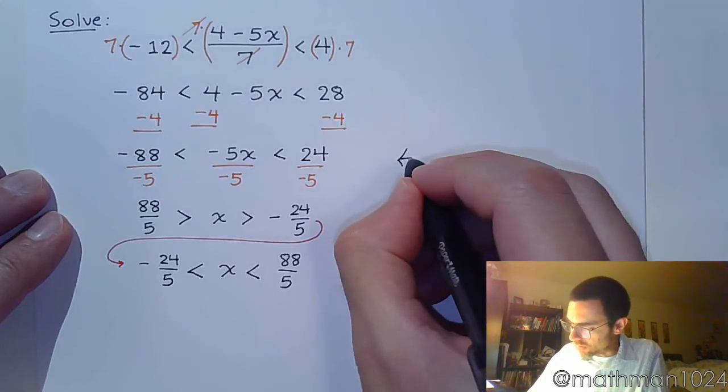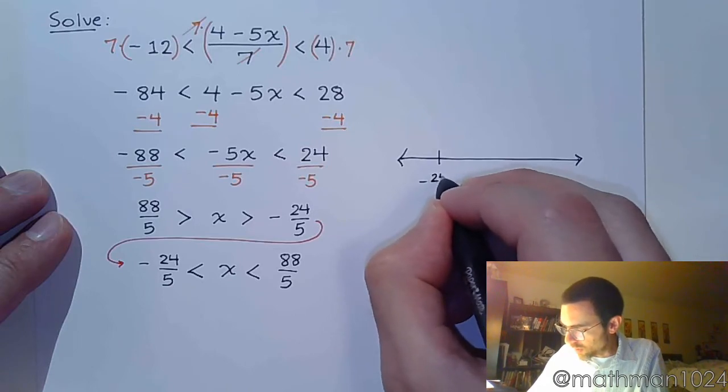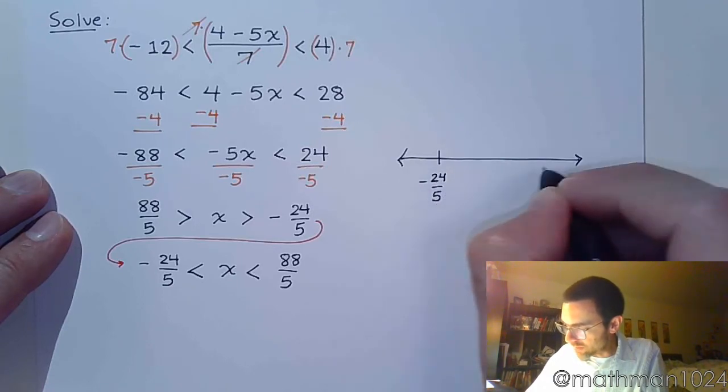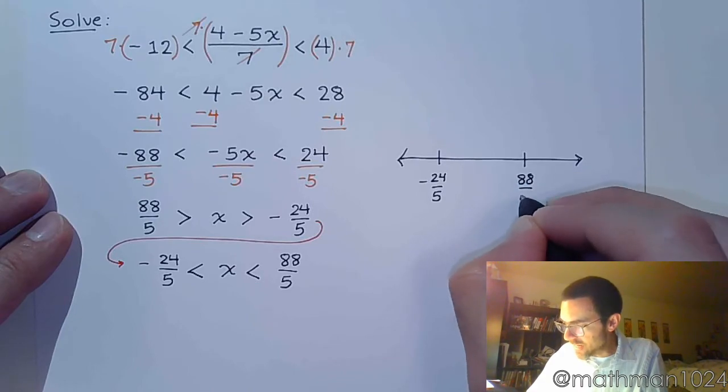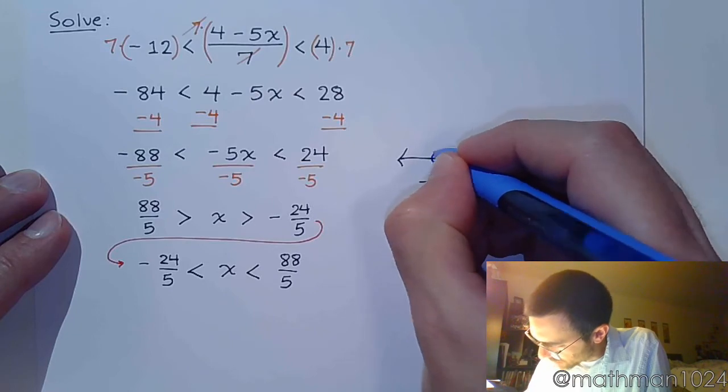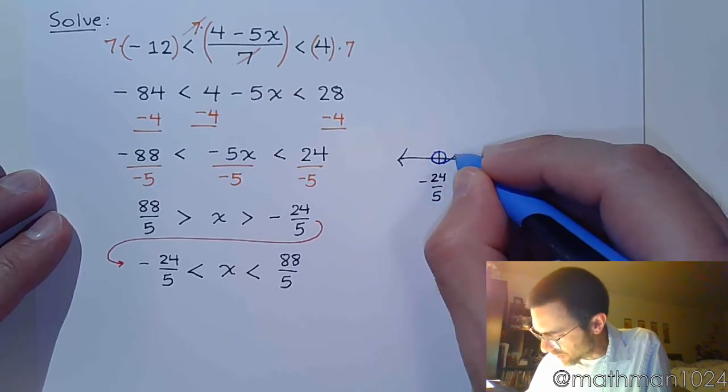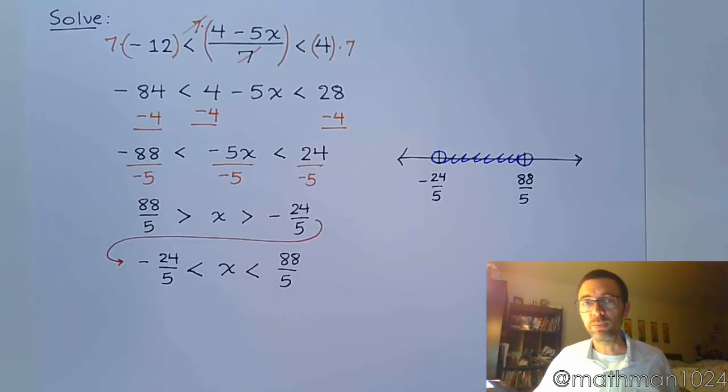Here, when we graph this, we're going from negative 24 over 5 to 88 over 5. So, my solution set is going to be everything that's in between these two numbers. But then you have to figure out, are you including those endpoints or not?